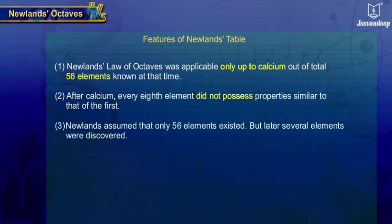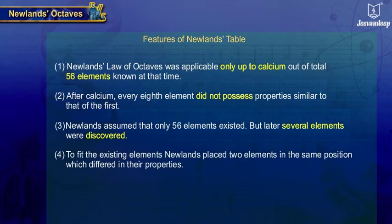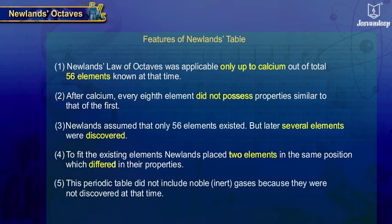3. Newlands assumed that only 56 elements existed, but later several elements were discovered. 4. To fit the existing elements, Newlands placed two elements in the same position, which differed in their properties. 5. This periodic table did not include noble or inert gases because they were not discovered at that time.